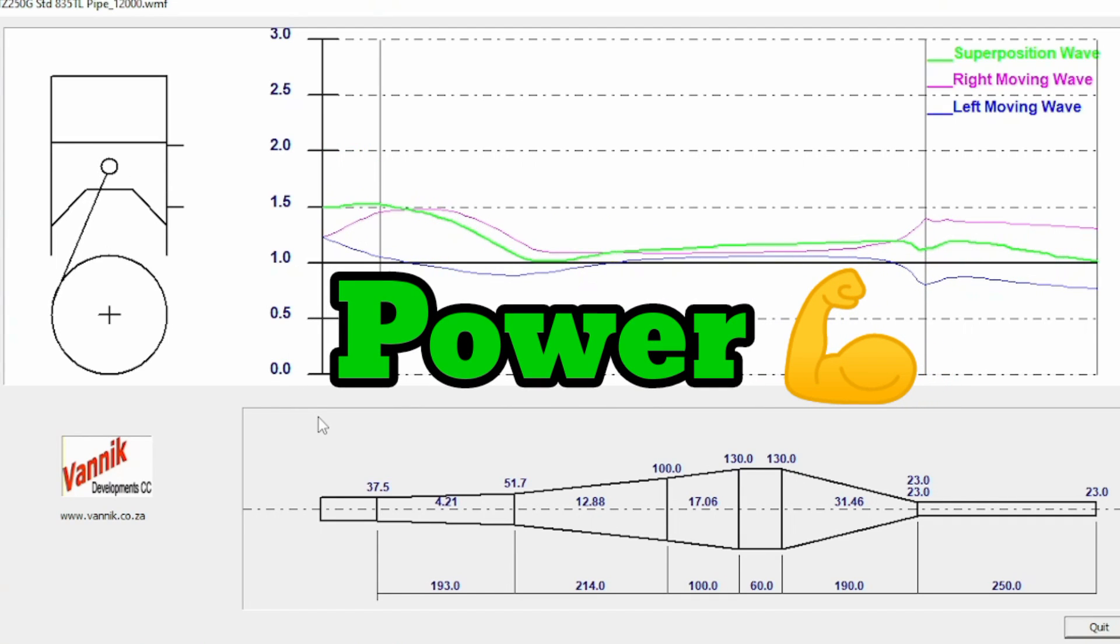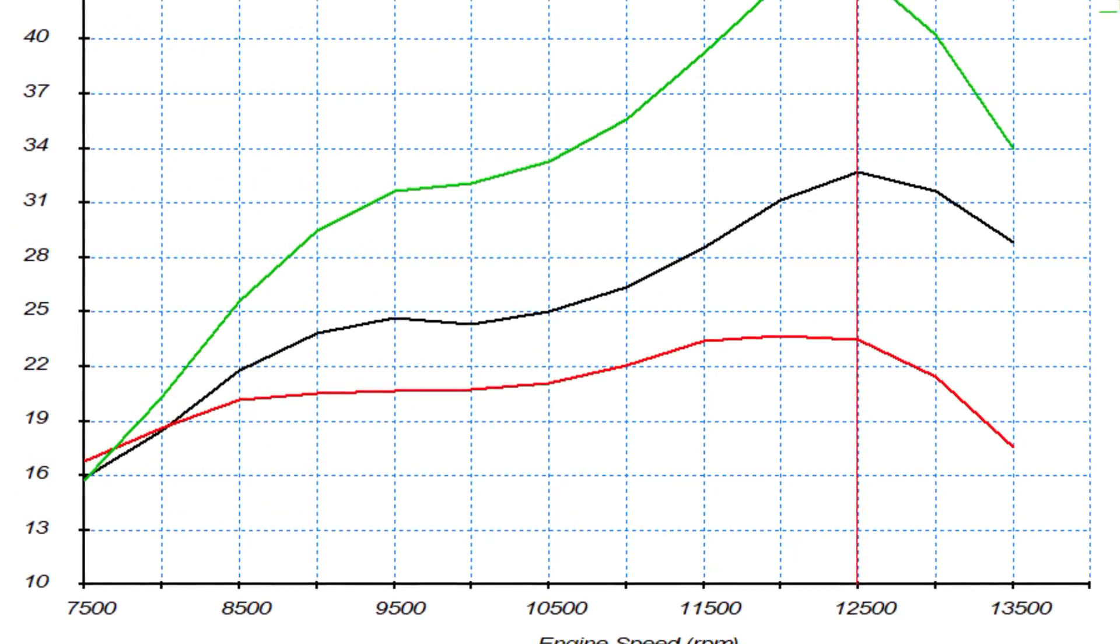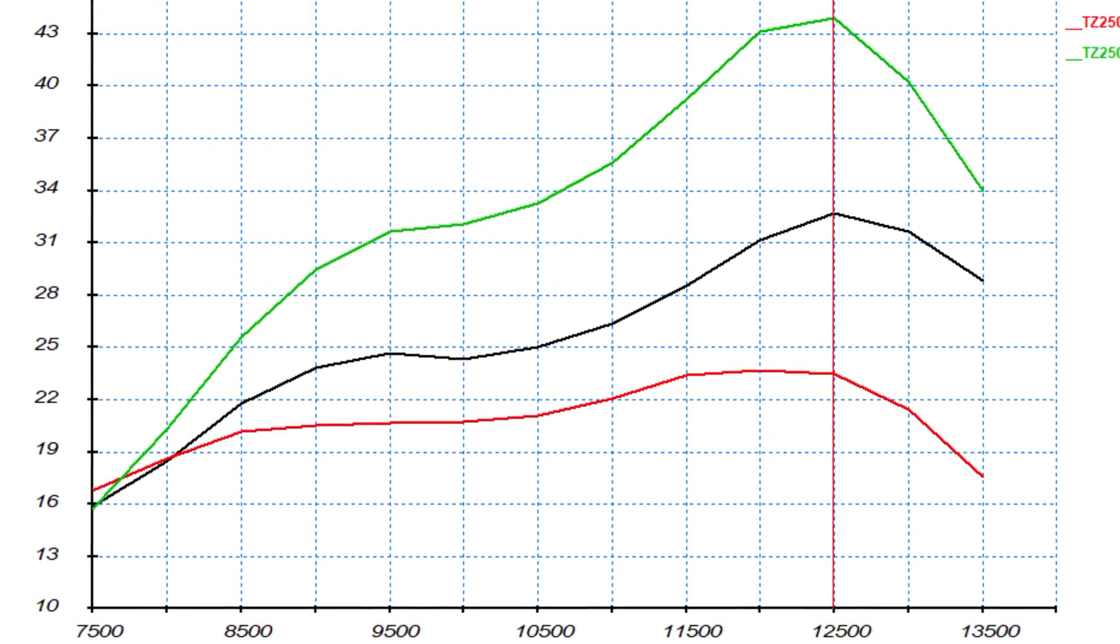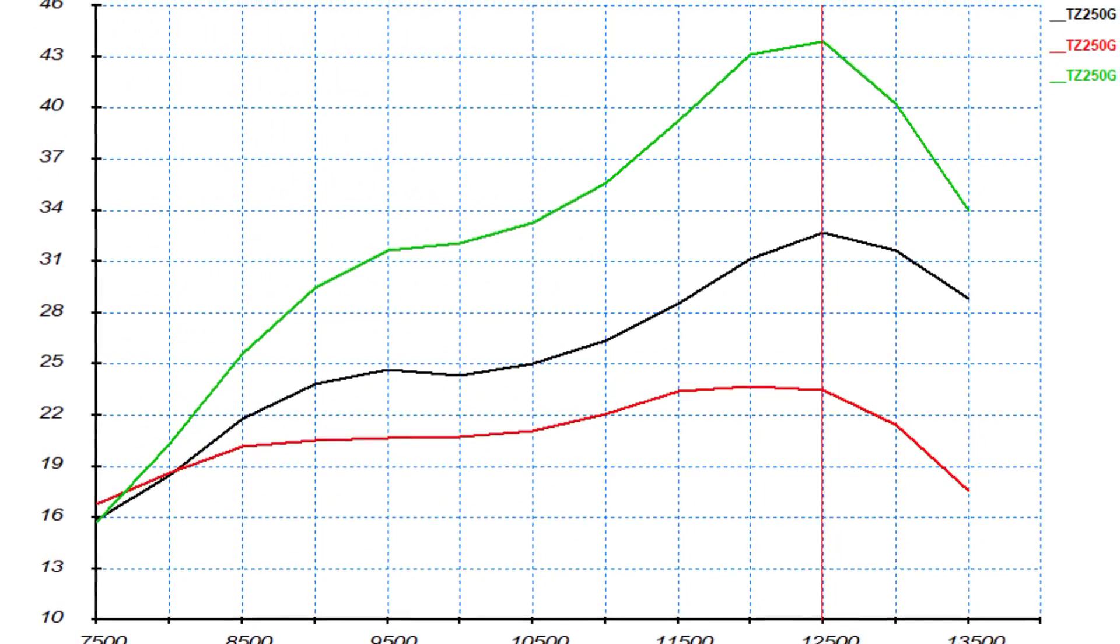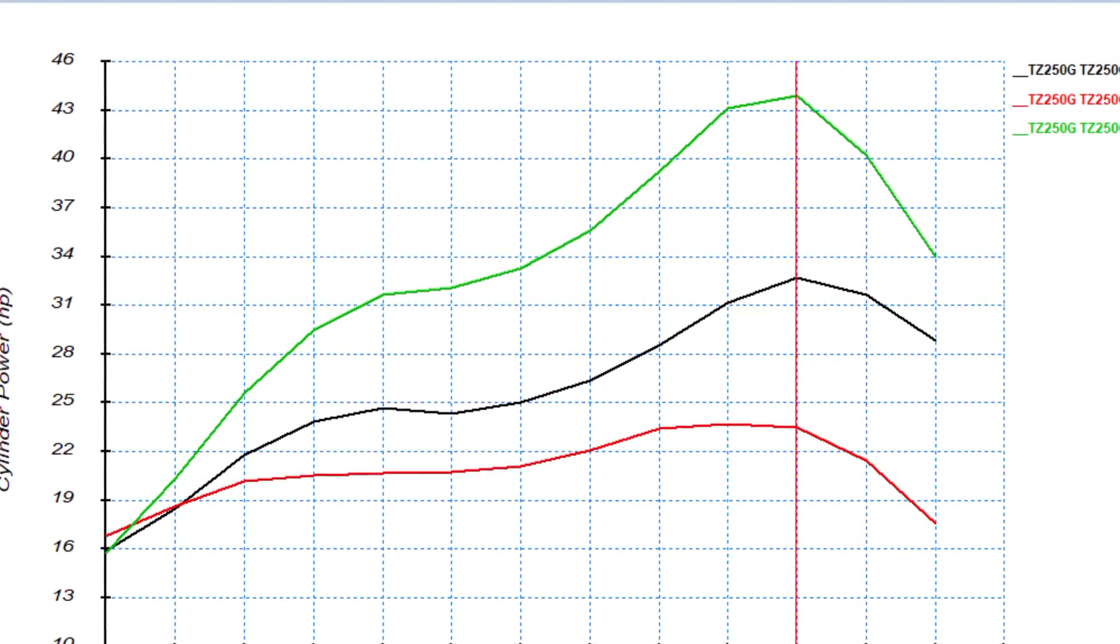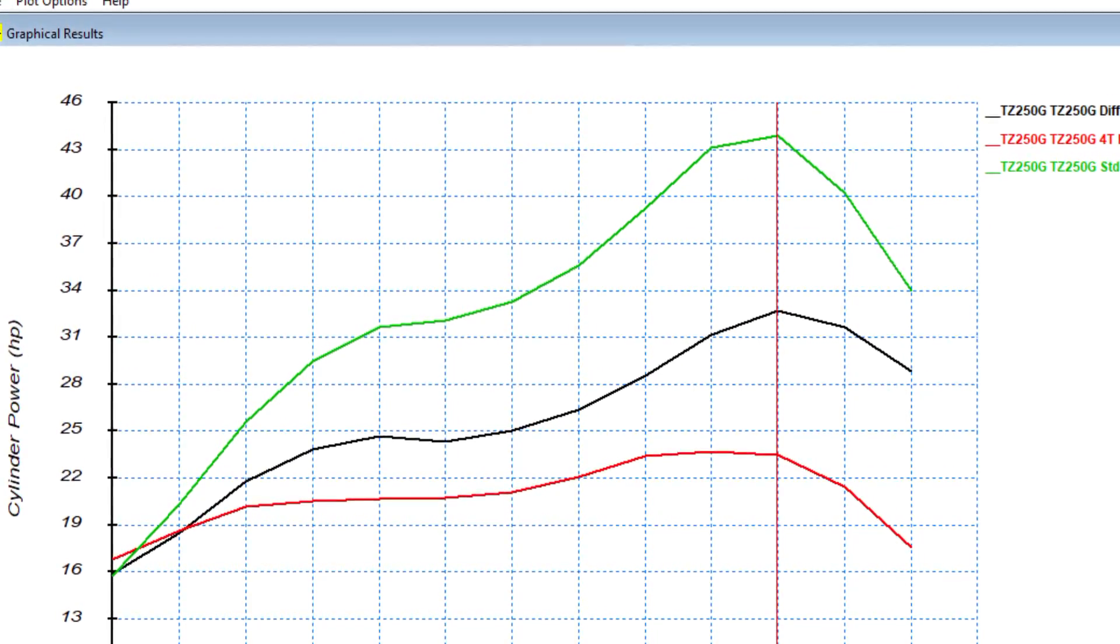And here you can see the results in the power graph. So red is your four-stroke straight pipe, black is just the diffuser section, and the green is the full expansion pipe. So as you can see even with a diffuser section it's more effective than just the plain pipe, but the full pipe gives the best power.